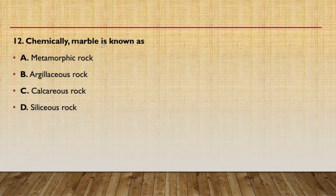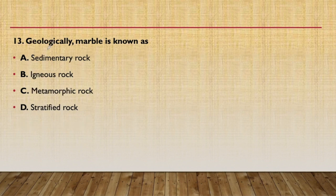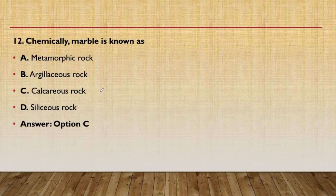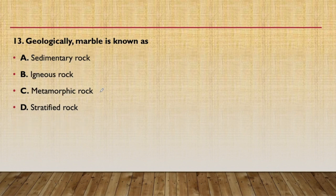Twelfth question: chemically, marble is known as calcareous rock. Geologically, marble is known as metamorphic rock. It is important to memorize both classifications — chemically it is calcareous rock and geologically it is metamorphic rock.